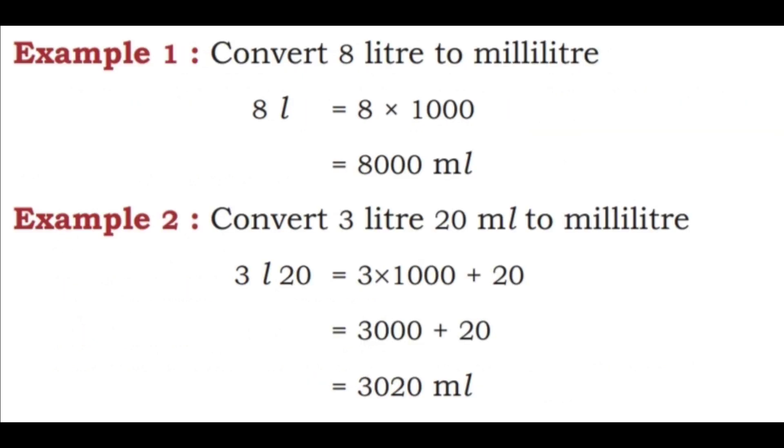Example 1. Convert 8 liter to milliliter. 8 liter equals 8 into 1000, that is equal to 8000 ml.